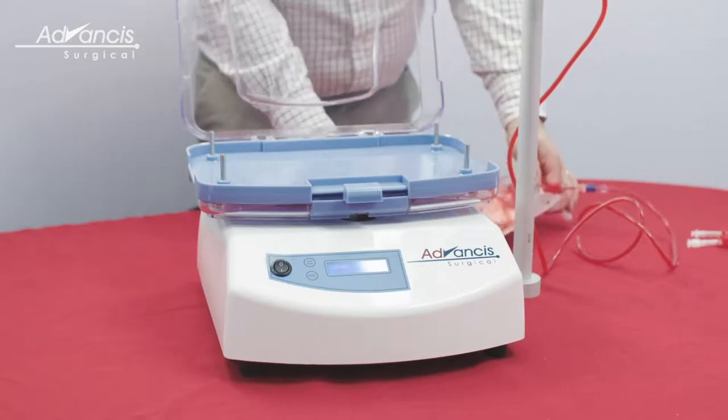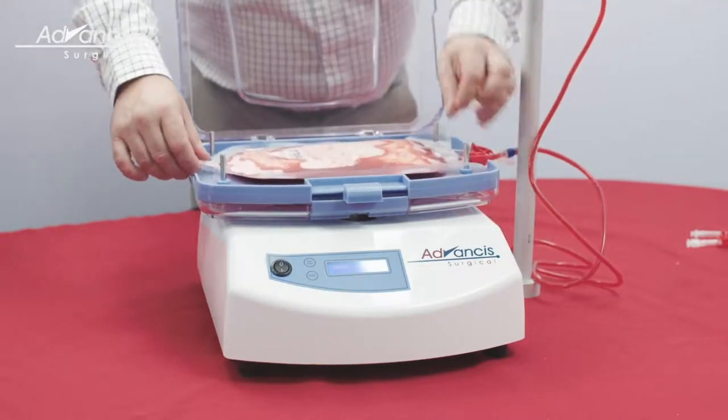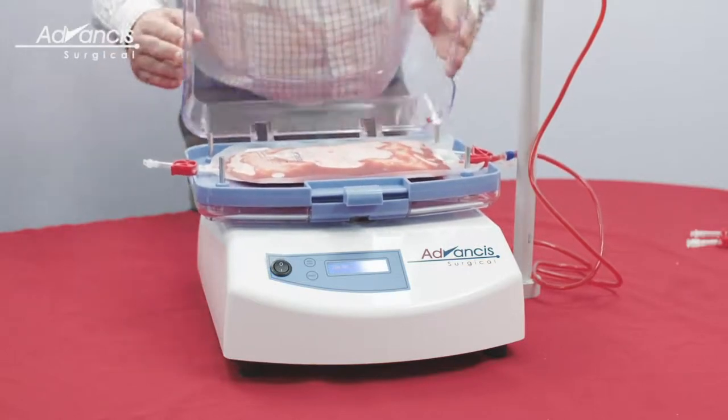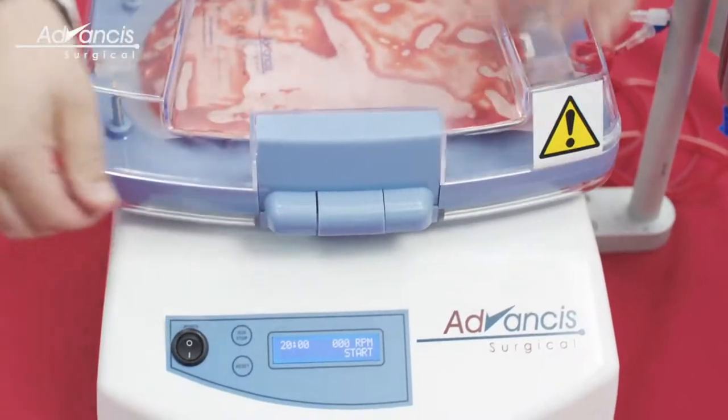Place the cell concentrator bag onto the shaker unit, ensuring that the bag is located on the metal locating studs. Close the lid on the Hemosep shaker and press the start-stop button to start processing.